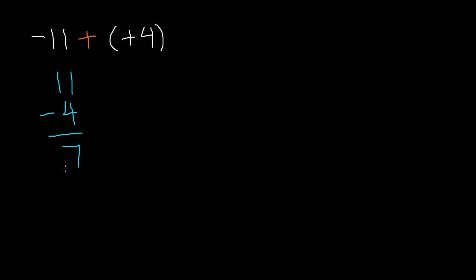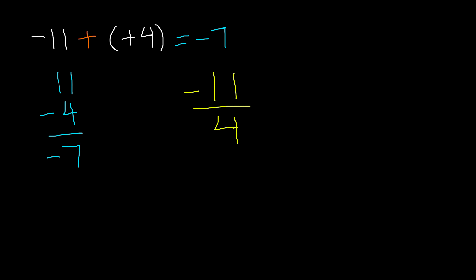Now I need to put the sign in front of the answer. I do that by looking at the two numbers, which are 11 and 4. The larger number is 11, and the sign that 11 has is negative. So we take the sign of the larger number — in front of 7, I put a negative sign, and that becomes negative 7. So the answer to negative 11 plus positive 4 is negative 7. This is how you add opposite numbers. Thanks for watching, and we'll see you guys next time. Bye.